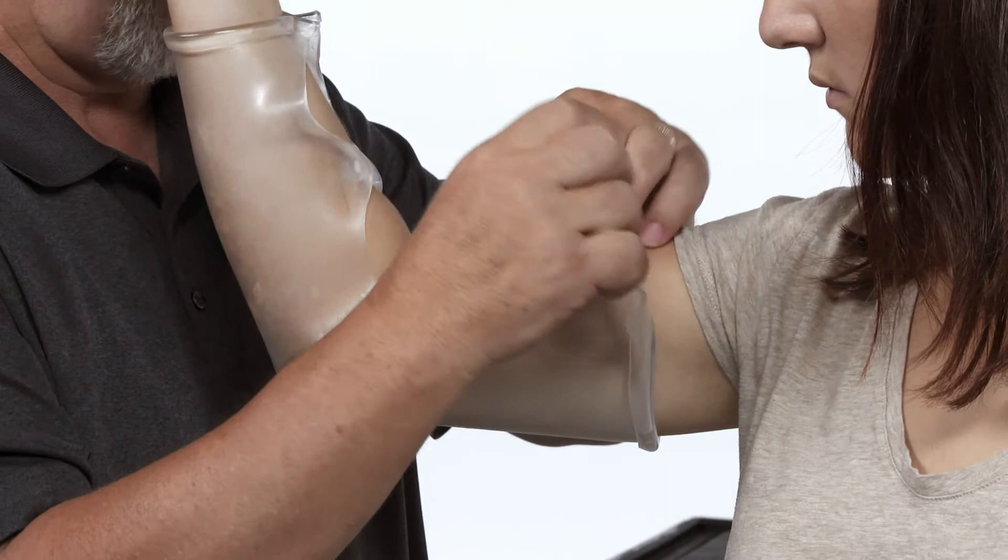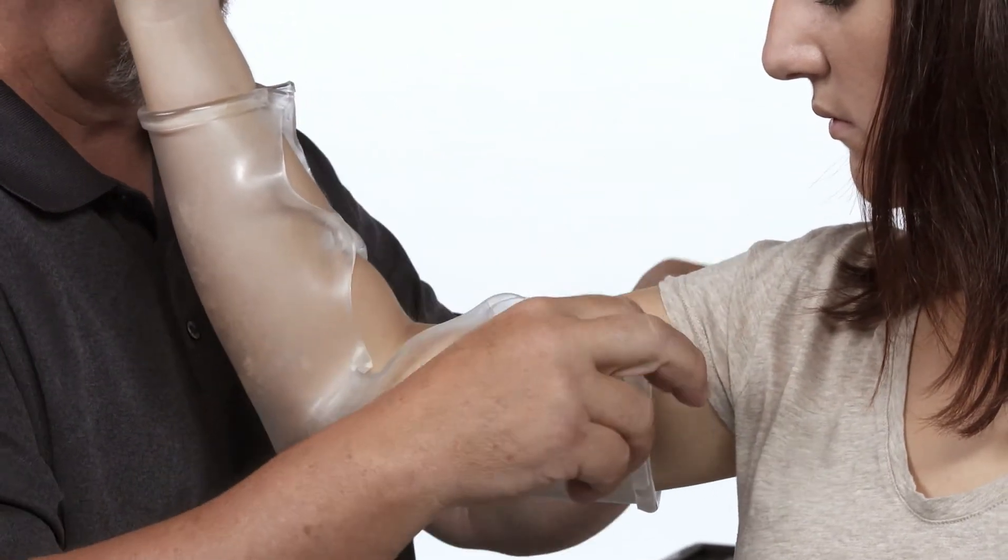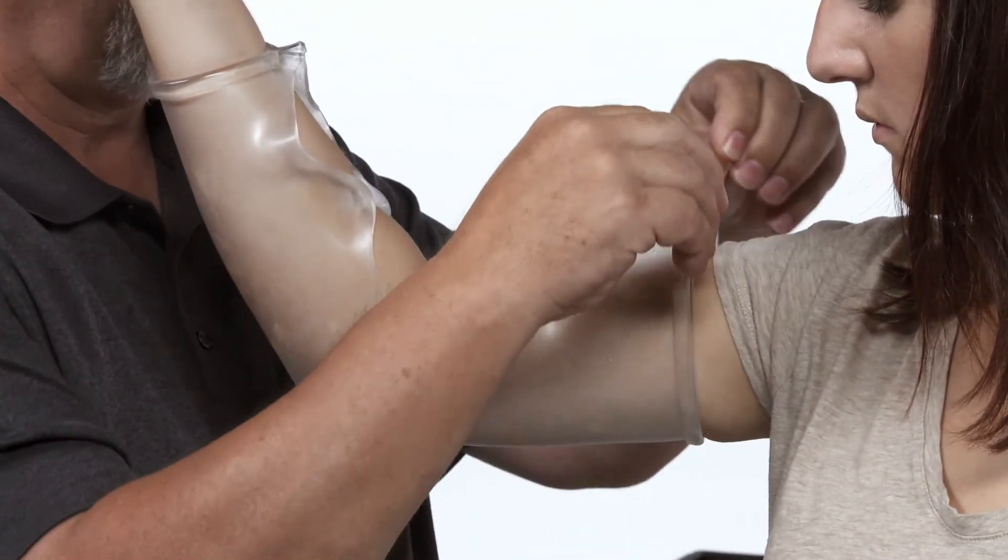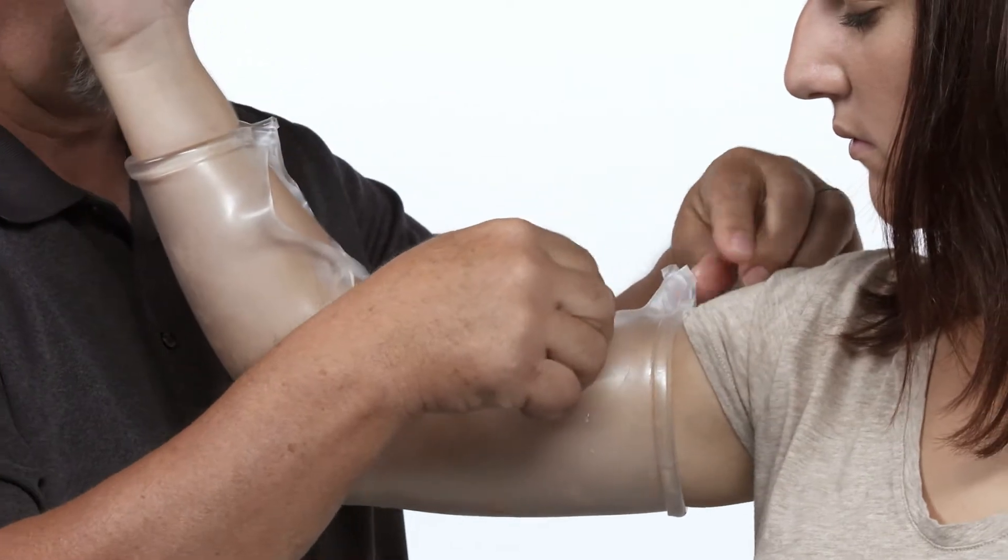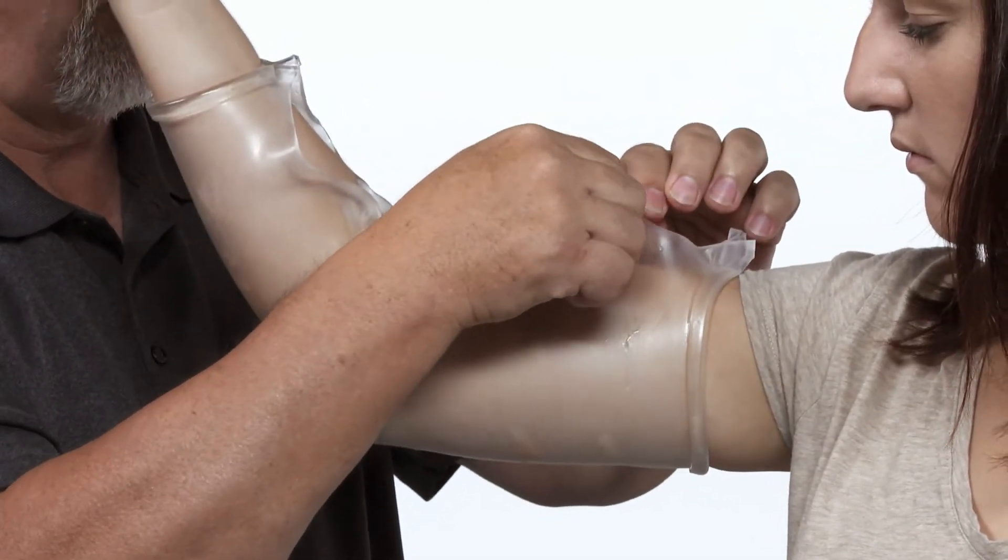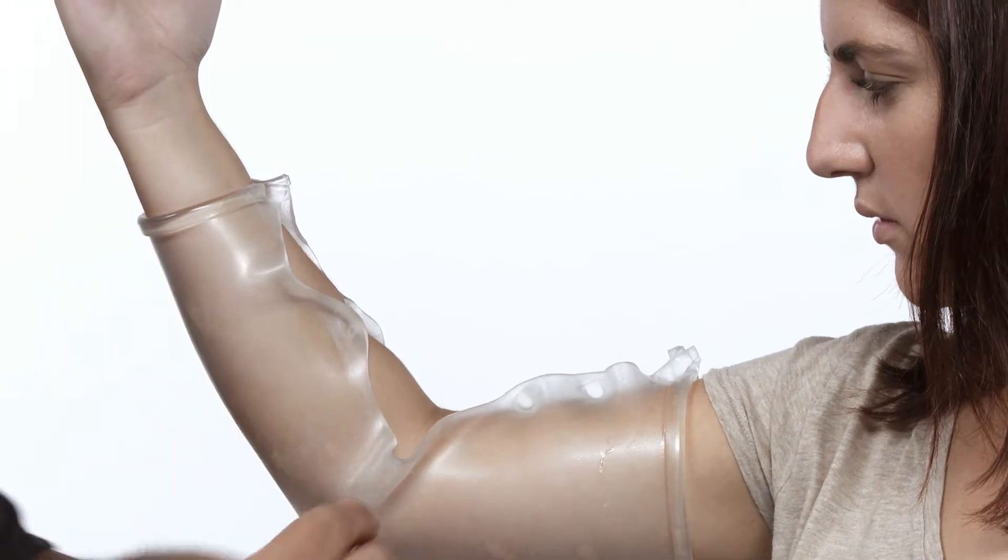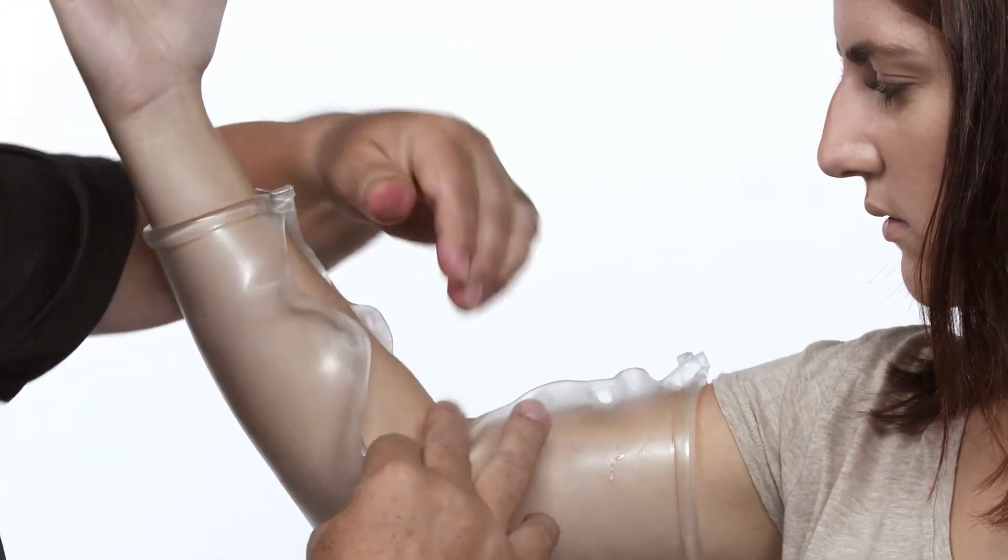Grasping the lateral borders just distal to the elbow, stretch the material around the underlying anatomy, pressing inside surface to inside surface to stick the borders together. Continue with this technique along the forearm to the upper arm.